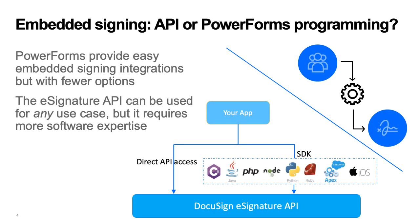You can use either Power Forms or the DocuSign eSignature API. Power Forms are much easier to integrate but provide fewer options. The eSignature API supports many more use cases and includes all of the features available from the DocuSign web app, but does require more programming. To help API developers, DocuSign offers SDKs for the languages shown here, plus many code examples and other training. This video focuses on using Power Forms. Other videos in this series cover the DocuSign eSignature API.